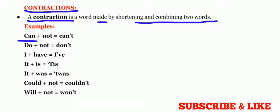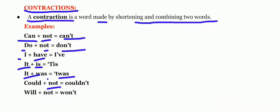For example, can plus not becomes can't. Next one is do plus not becomes don't. Next one is I plus have becomes I've. The next one is it plus is becomes 'tis. The next one is it plus was becomes 'twas. Yes, the next is could plus not becomes couldn't. The next one is will plus not becomes won't.